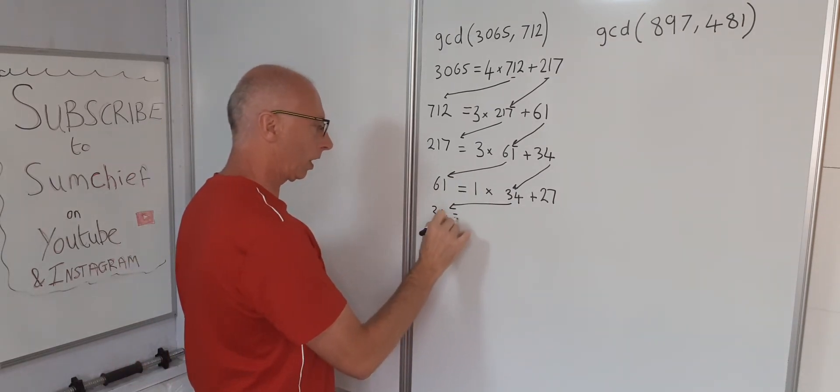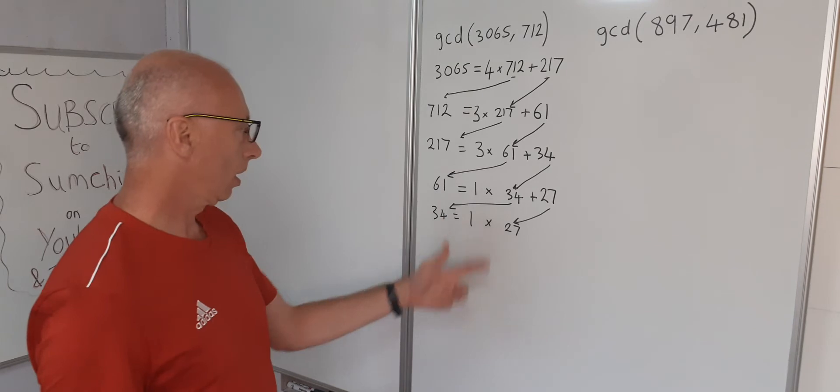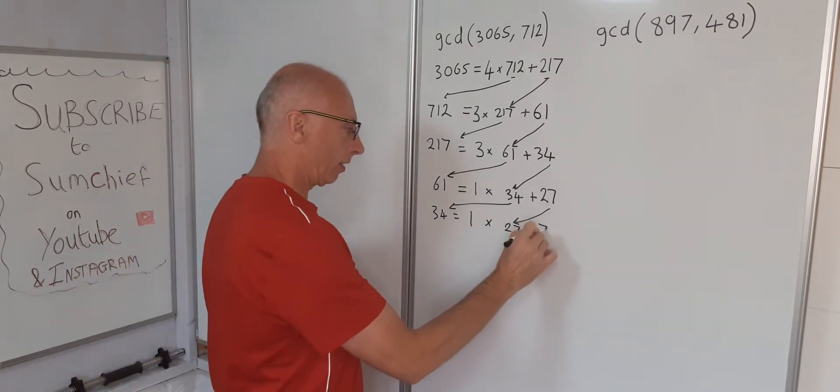34 equals something times 27. That'll be 1 times 27 and then 7 left over.